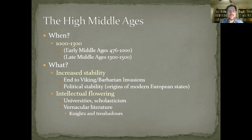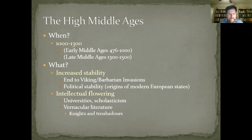The high middle ages is the subject of chapters nine and ten of your Spielvogel textbook. We generally say the high middle ages lasts from the year 1000 to the year 1300. Remember, we divide the middle ages into three pieces: the early, high, and late middle ages. So what makes the high middle ages a distinct period?